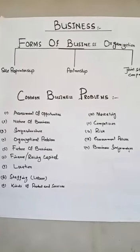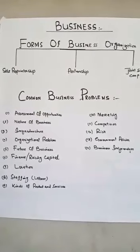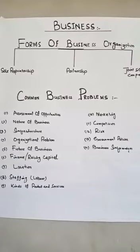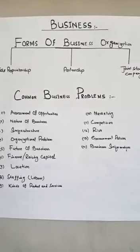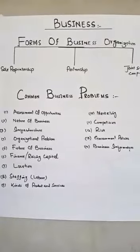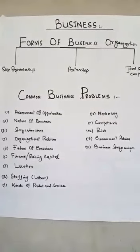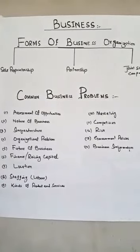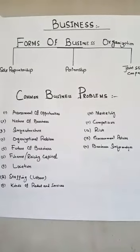There are two types of businesses. Number one is profit-oriented business, and number two is non-profit-oriented business. Profit-oriented businesses are those which are only focused on making profit. Non-profit organizations are those which work for the welfare of society.